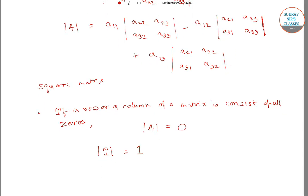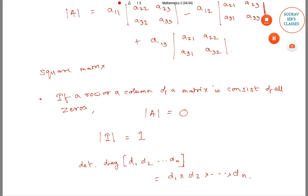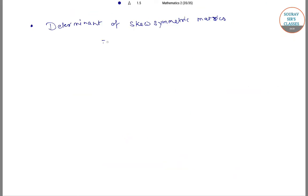The determinant of an identity matrix is equal to one. The determinant of a diagonal matrix is equal to the product of its diagonal elements, that is d1 into d2 into so on till dn. Next, the determinant of a skew-symmetric matrix is equal to zero when the matrix is of odd order.